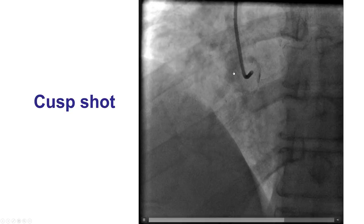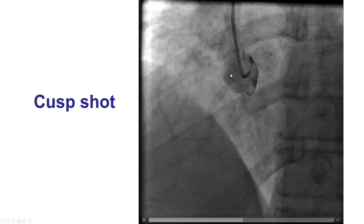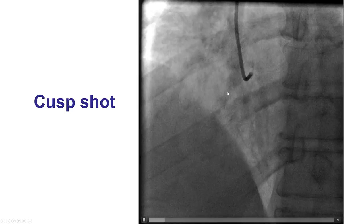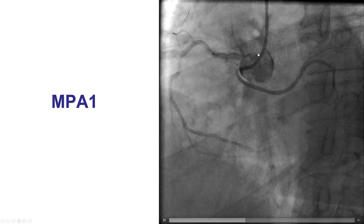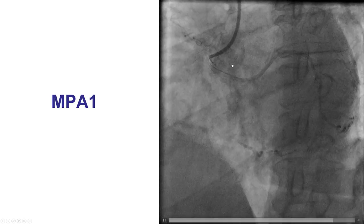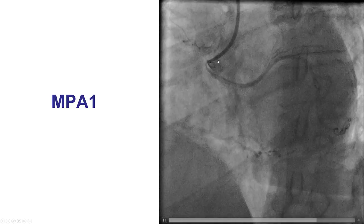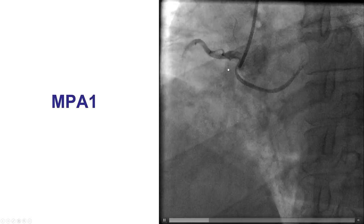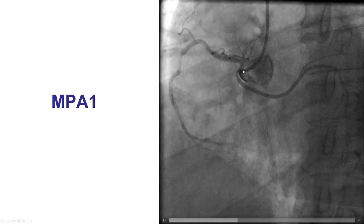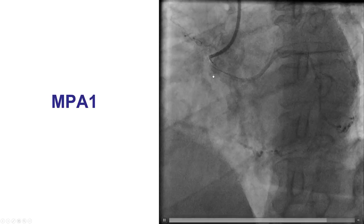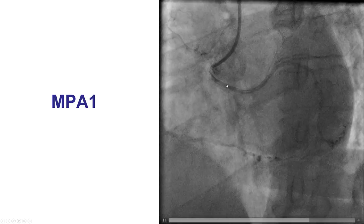So we did a non-selective injection on the right sinus of Valsalva, and that does demonstrate a vessel coming off which is likely an anomalous circumflex. Using a multipurpose catheter, we were able to see that there is an anomalous circumflex originating from the right sinus of Valsalva below the origin of the right coronary artery. Not only that, but it seems to have a high-grade lesion in the proximal segment, which seemed to be the reason why we had difficulty engaging the vessel.